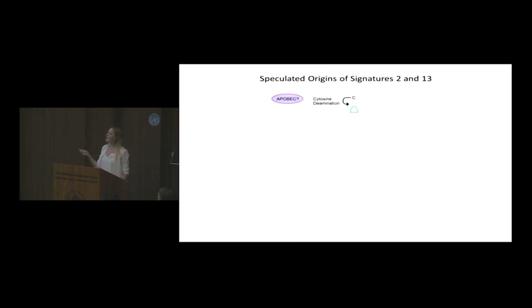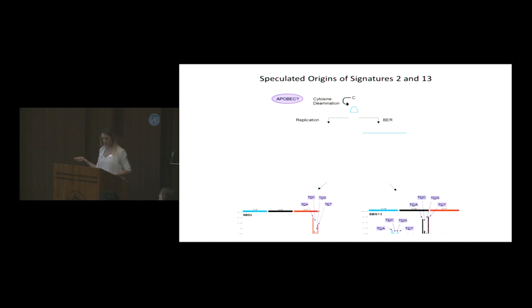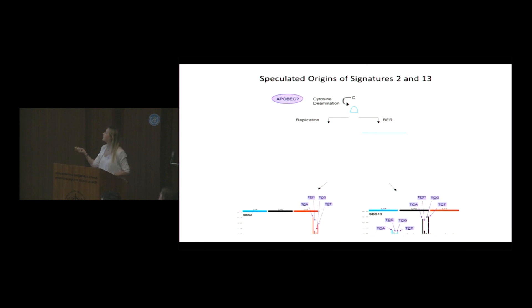The reason they co-occur comes down to the mechanistics of how they arise. The process starts with APOBEC deaminating cytosine, converting it to uracil. Then depending on how that uracil is repaired or acted upon, you either get a C-to-T mutation upon replication, or a C-to-G or C-to-A mutation — two different mechanisms leading to two different signature patterns.